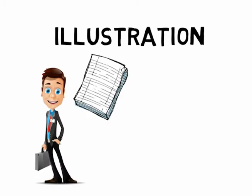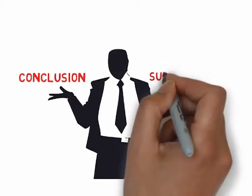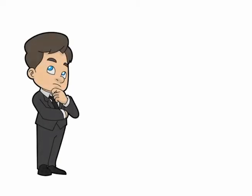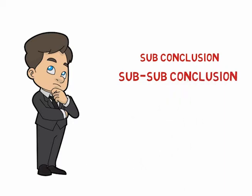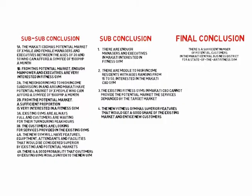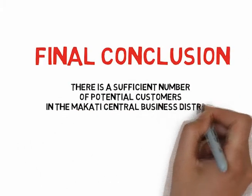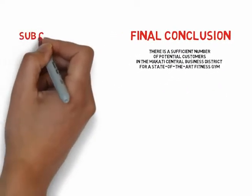For illustration purposes, let us say that the market researcher wants to make the conclusion that there is sufficient market in the Makati Central Business District to warrant the establishment of a state-of-the-art fitness gym. This conclusion has to be supported by sub-conclusions on the different clientele who would most likely avail of the service. The market researcher would also have to assert several sub-sub-conclusions for every sub-conclusion. The final conclusion is: there is a sufficient number of potential customers in the Makati CBD for a state-of-the-art fitness gym.